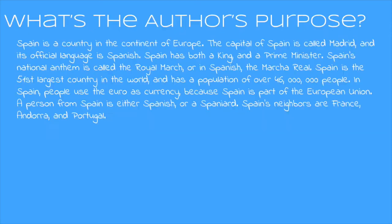Let's give it a try. Read along with me. Spain is a country in the continent of Europe. The capital of Spain is called Madrid and its official language is Spanish. Spain has both a king and a prime minister. Spain's national anthem is called the Royal March, or in Spanish, the Marcha Real. Spain is the 51st largest country in the world and it has a population of over 46 million people. In Spain, people use the Euro as currency because Spain is part of the European Union. A person from Spain is either Spanish or a Spaniard.